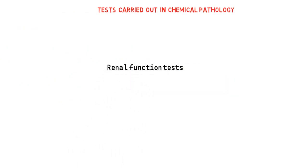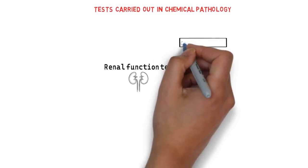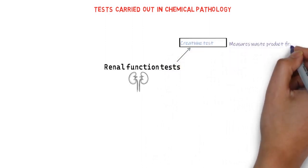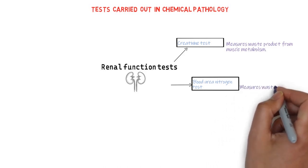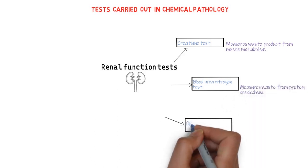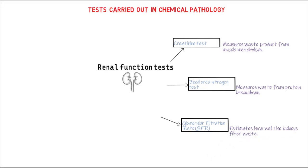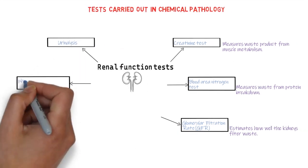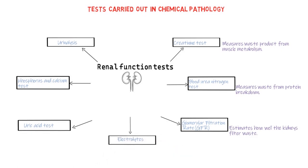The renal function test is another type of test carried out in a chemical pathology lab. This one assesses the health of the kidneys. It comprises of different tests including the creatinine test, which measures waste products produced by muscle metabolism. We also have blood urea nitrogen test, which measures the amount of waste resulting from the breakdown of body protein. We also have glomerular filtration rate (GFR), a test that estimates how well the kidneys are filtering body wastes. Other tests include urinalysis, phosphorus, calcium, uric acid tests, and electrolytes. These tests collectively give an overall report on how the kidneys are functioning.